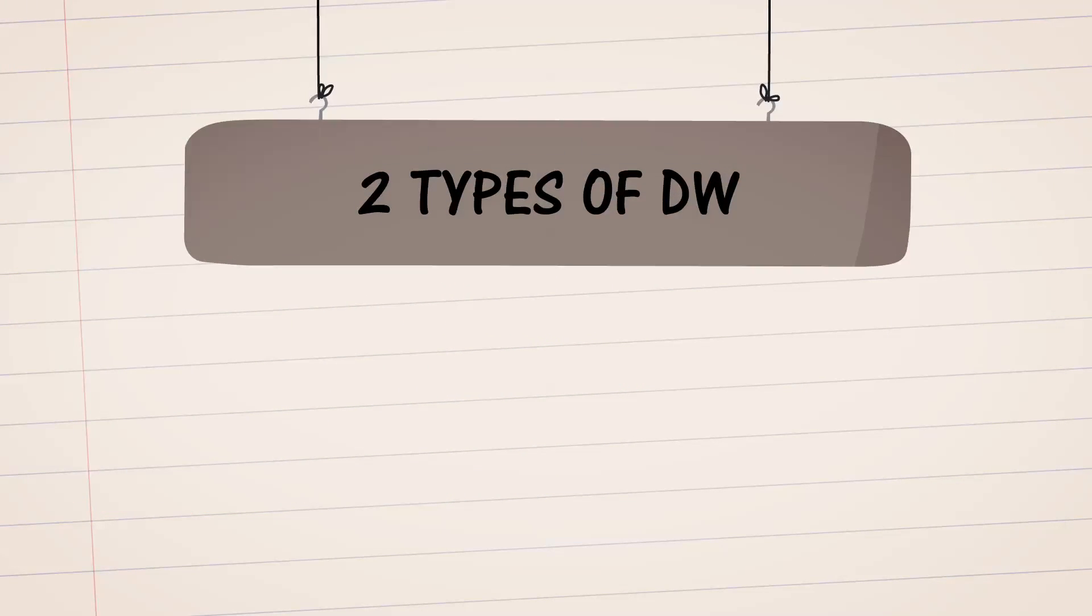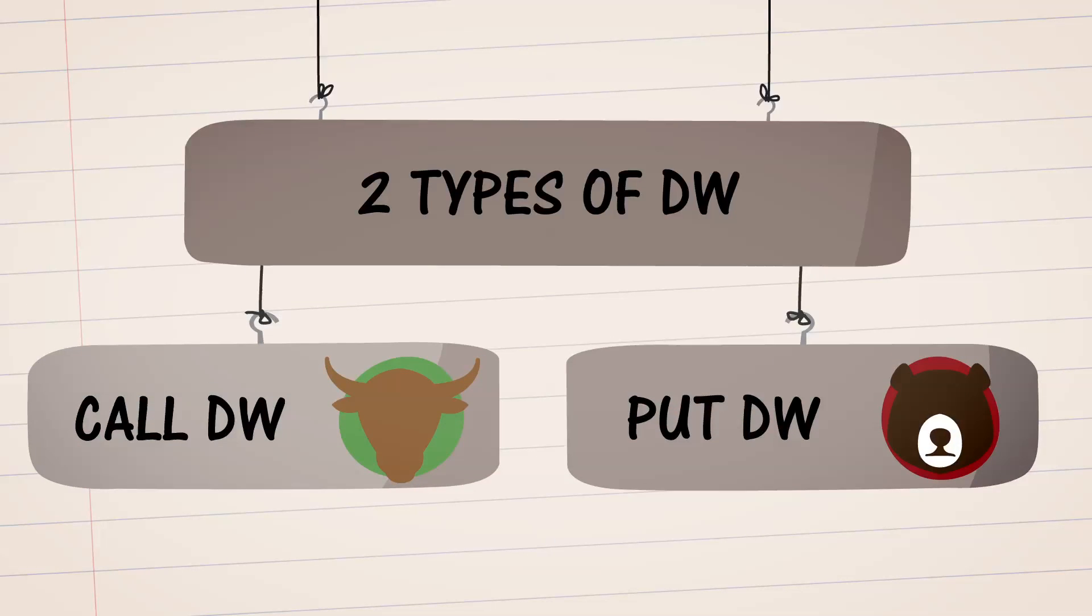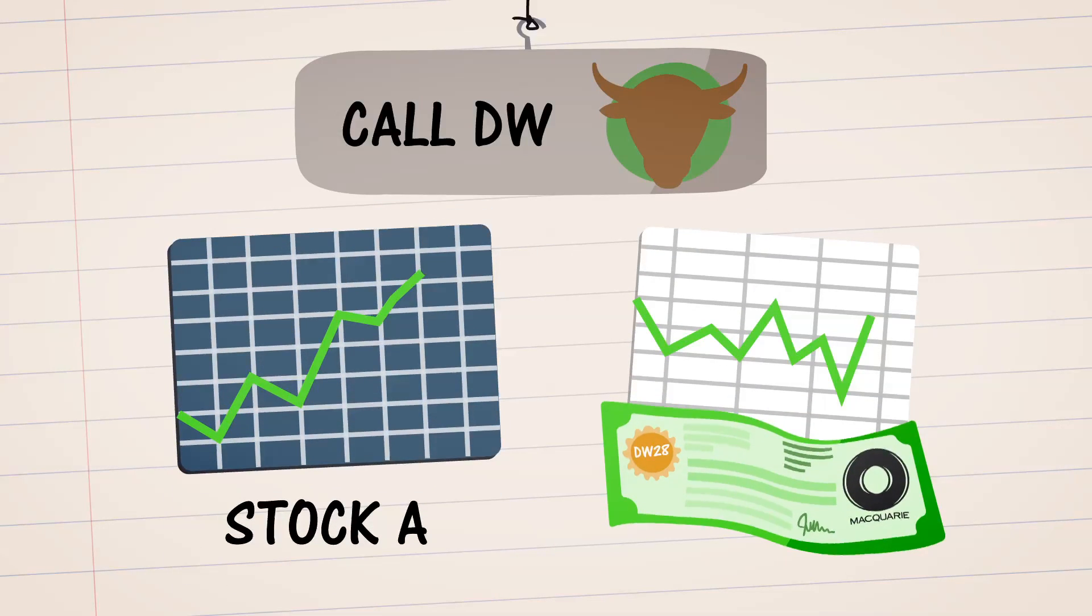There are two types of derivative warrants, call warrants and put warrants. The important thing to remember about a call warrant is that its value increases when the price of the underlying asset increases.